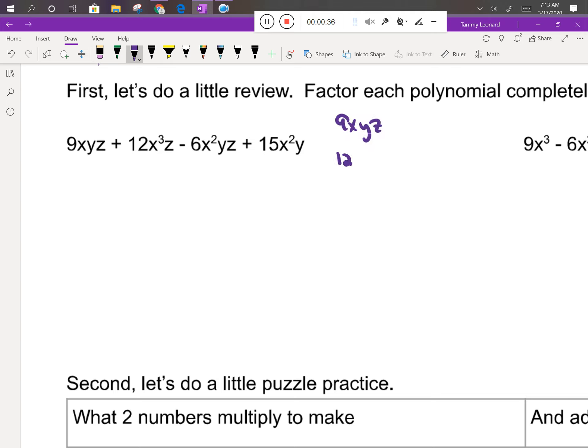So if I'm looking at each of these terms, the 9xyz, the 12x³z, the -6x²yz, and the 15x²y, the first thing I'm going to note on each list is that they're divisible by 3, so 3 is going to be part of their GCF. The second thing that I notice is they all have an x in them, so x is going to be part of their GCF. The next variable I see is a y, but only some of the terms have a y, and the next variable is a z, and only some of the terms have a z, so that looks like it's the greatest common factor.